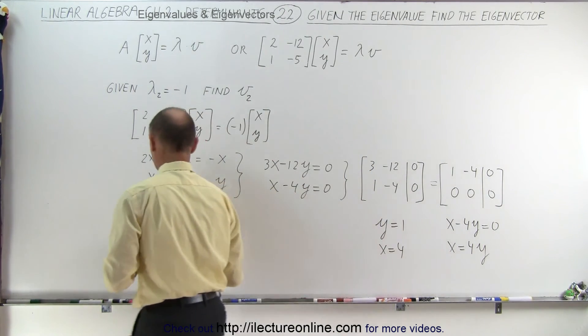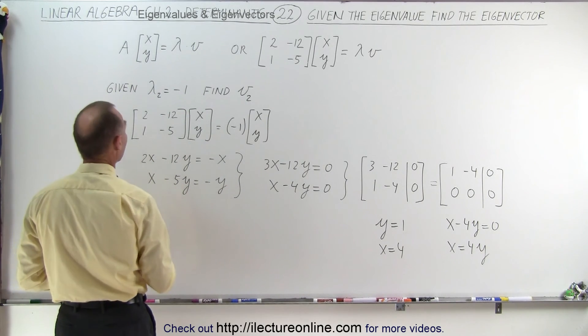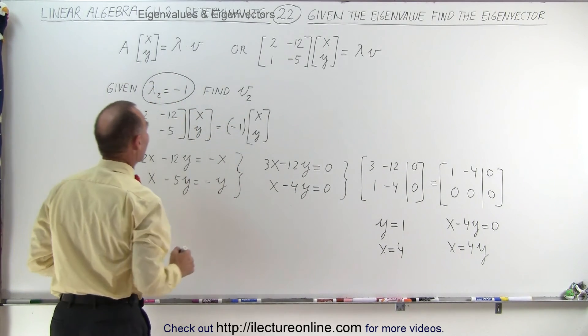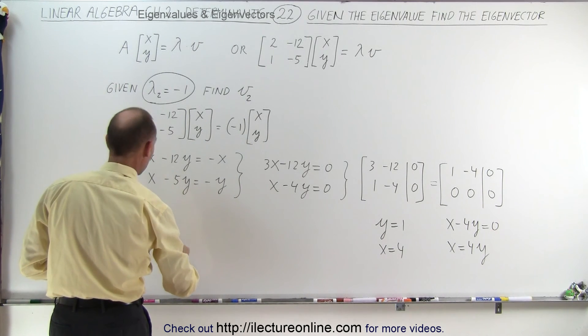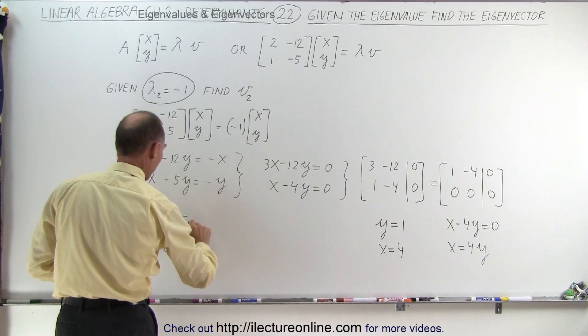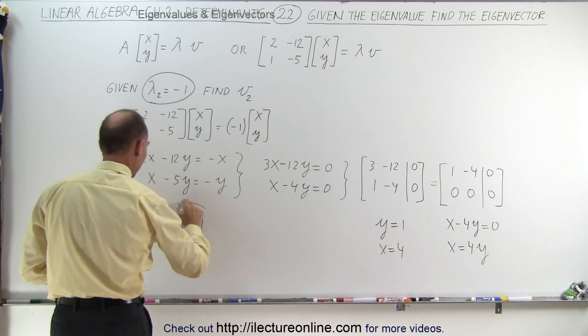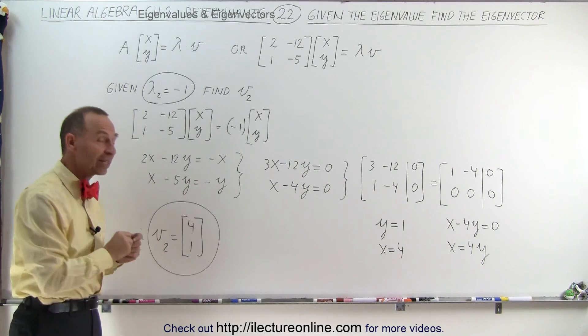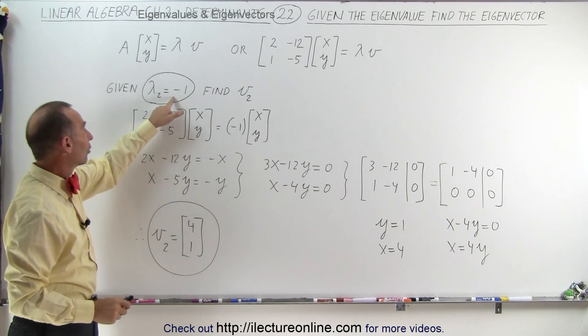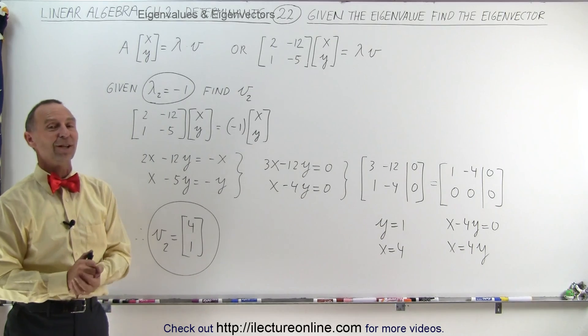And therefore, from that we can conclude that if negative 1 is our eigenvalue, then the corresponding eigenvector v2 is equal to 4 and 1. And if you go back to the previous video, you will find indeed that that was our second eigenvector to this corresponding eigenvalue. And that's how it's done.